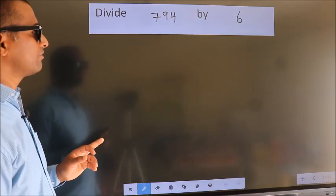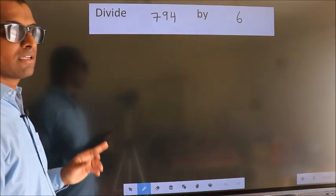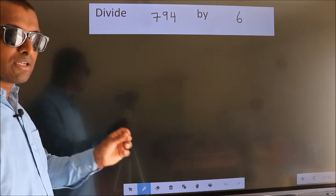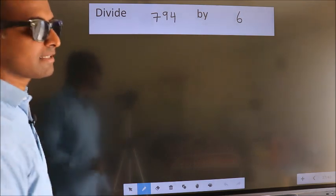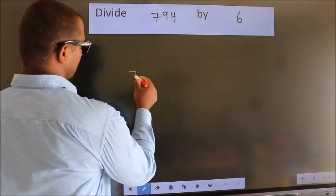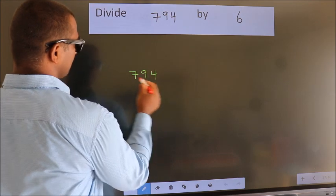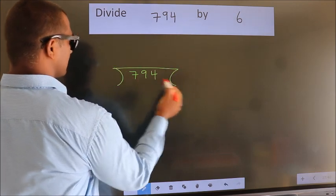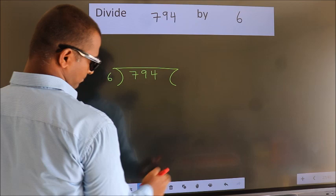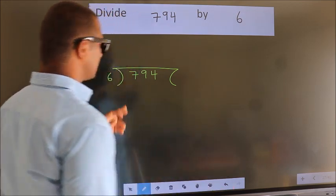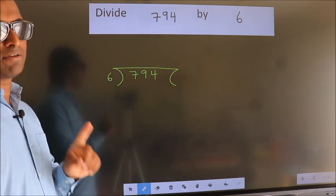Divide 794 by 6. To do this division, we should frame it in this way. 794 here, 6 here. This is your step 1.